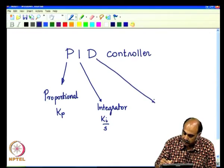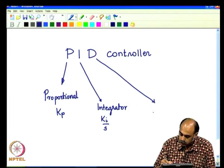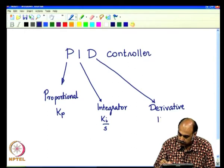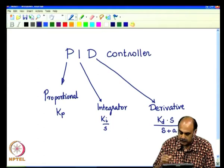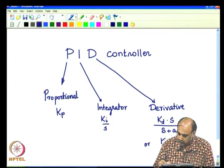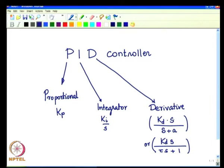Then we have the derivative component. Since a pure derivative does not exist, you have a gain of the form KD times S divided by (S plus A), or equivalently KD times S divided by (tau·S plus 1) taking A common. In both cases, you have a zero at S equals 0 and a pole at S equals minus A, or S equals minus 1/tau.